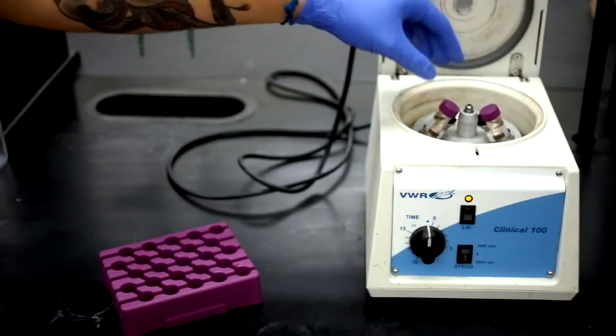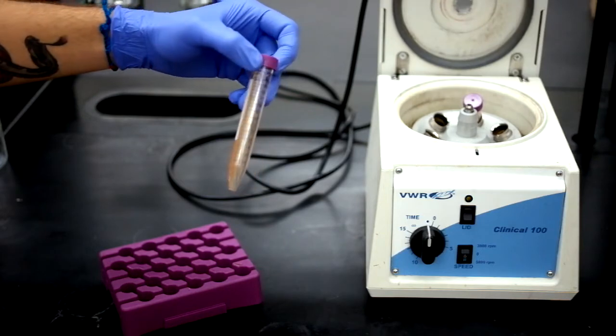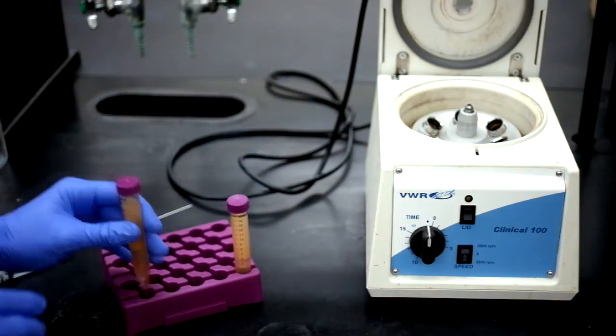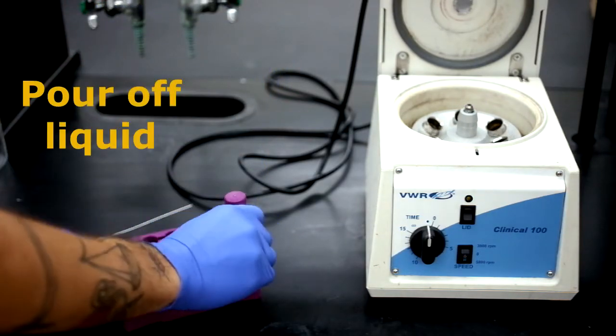After the tubes have stopped spinning, take them out and make sure that all of the nanoparticles have collected to one side of the tube. You can then pour off the liquid phase and save the nanoparticles.